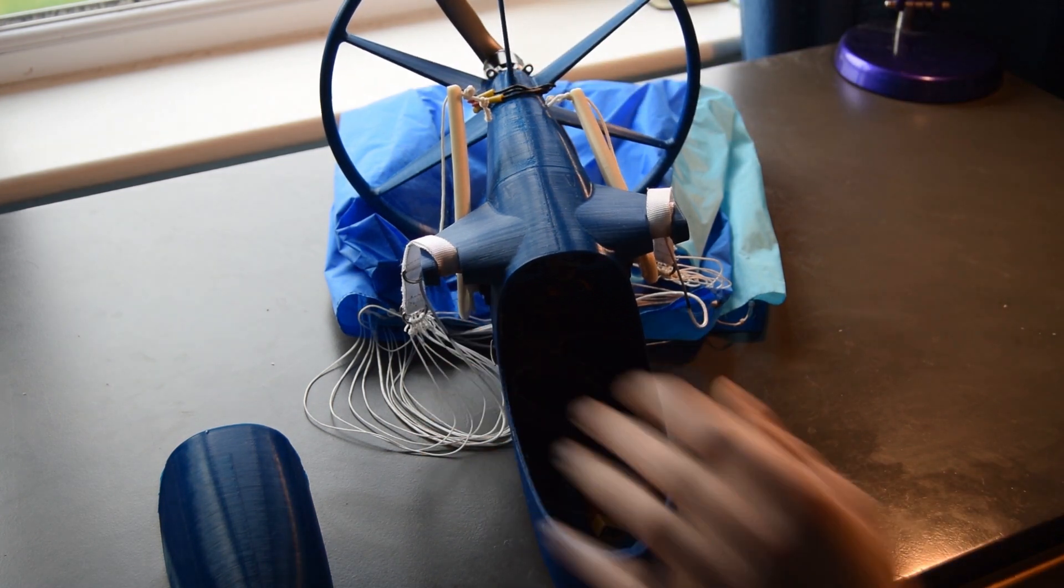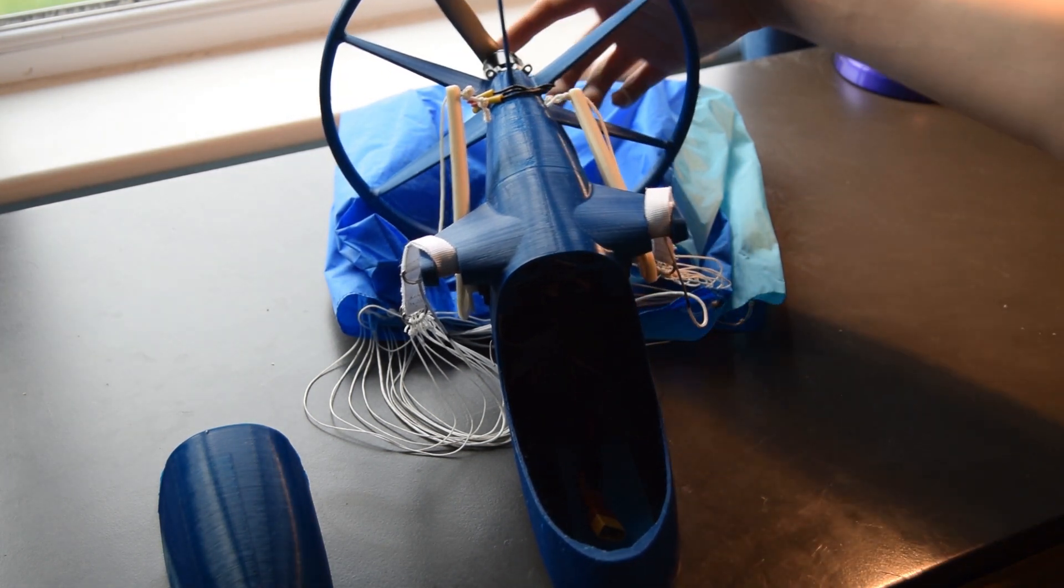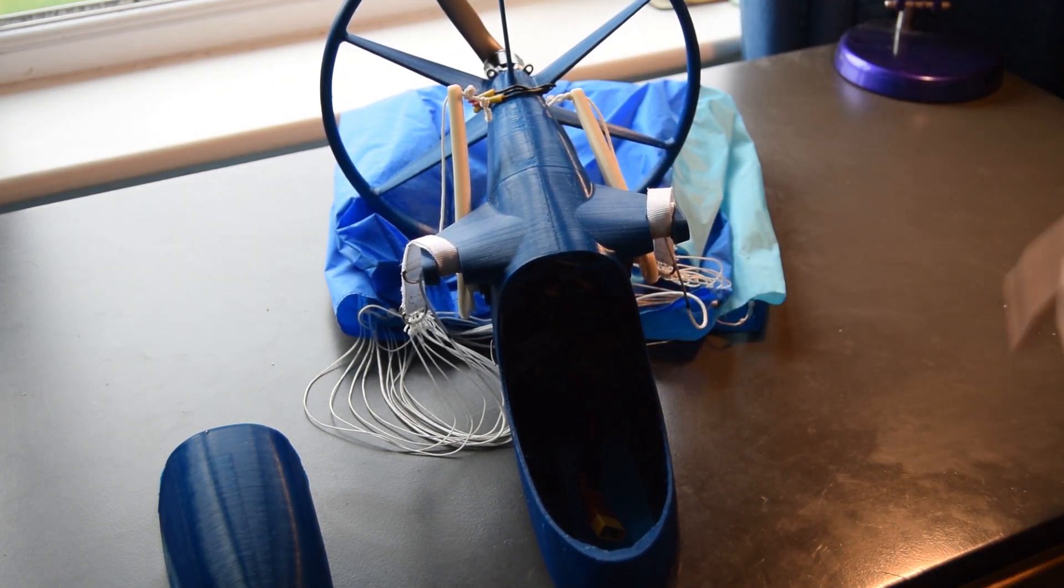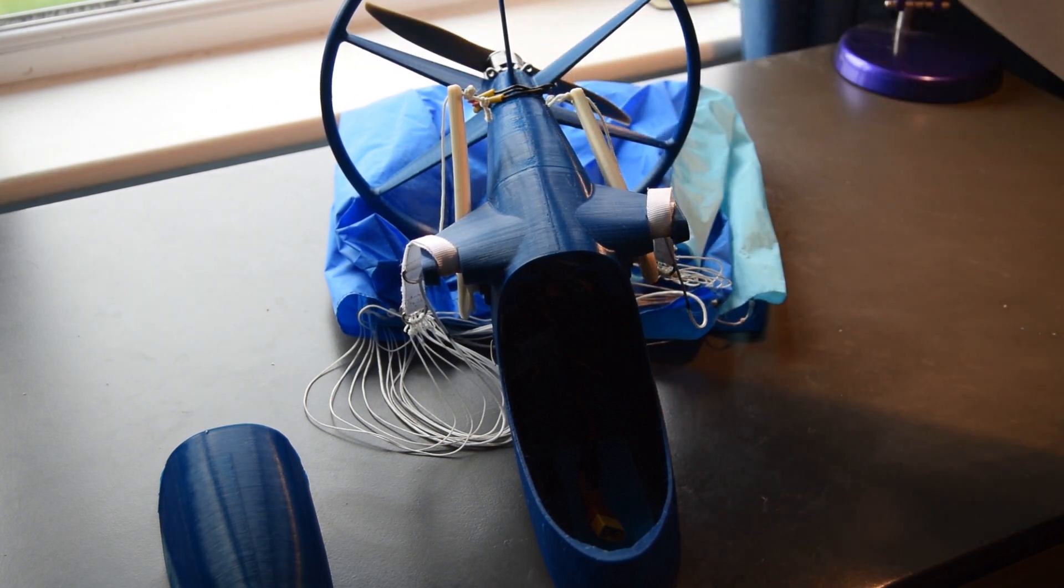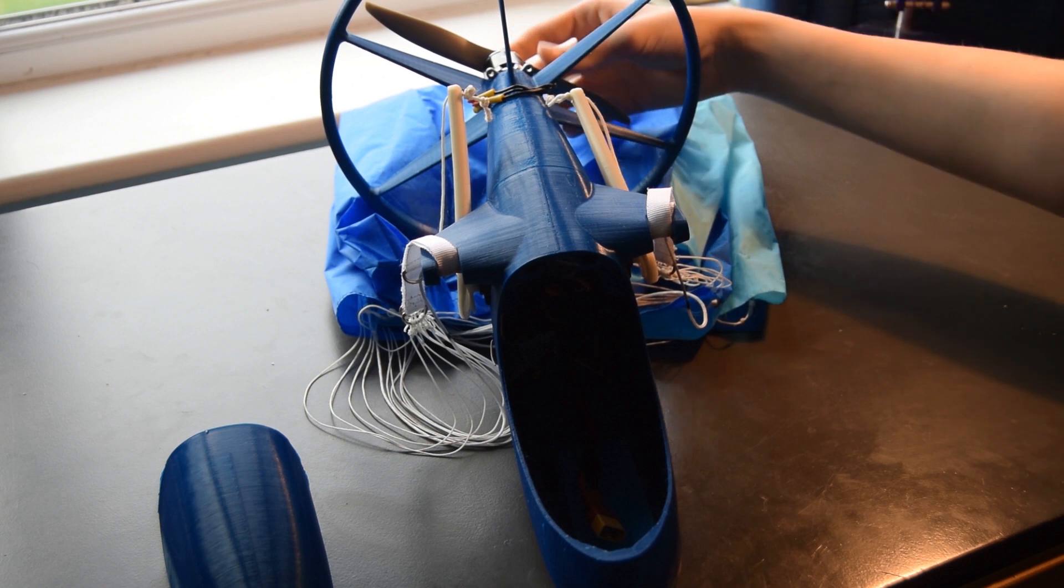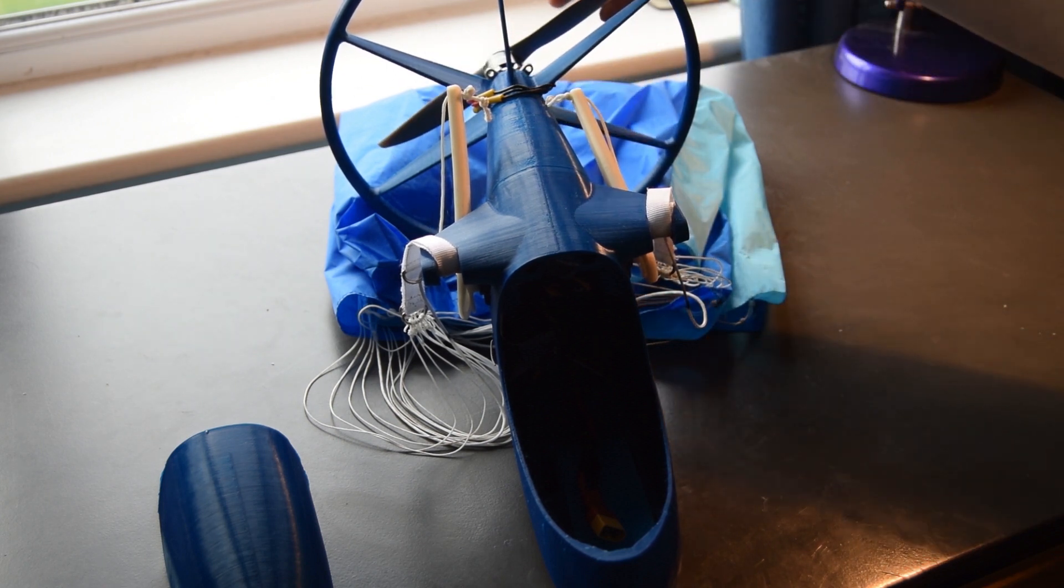I've got a Spektrum receiver in the body and that leads to a 50 amp ESC, which might be a bit overkill, which is attached to a 1180 kV motor, which is the FT radial motor swinging an 8x4 propeller.